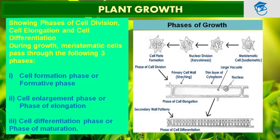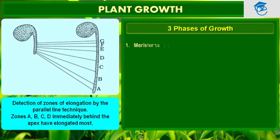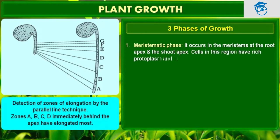So all three phases of growth are: the cell formation phase, where formation of plant cells takes place by karyokinesis; then the cell enlargement phase or phase of elongation, where it elongates due to stretching; and third, the cell differentiation phase or phase of maturation, where the cell gets fully matured by forming secondary wall patterns. These three phases are namely meristematic, elongation, and maturation.